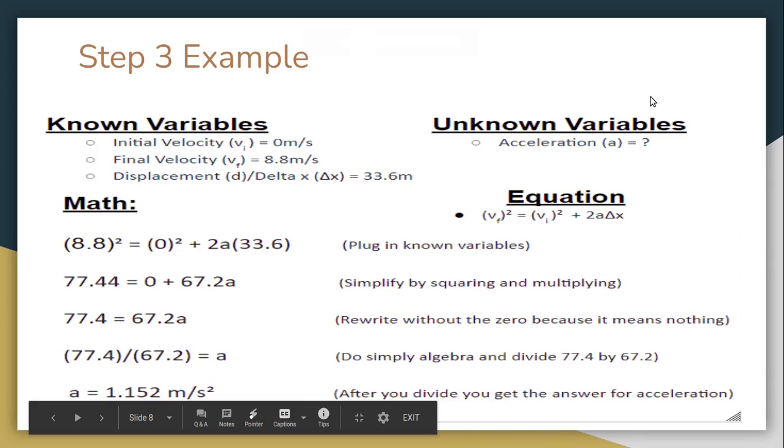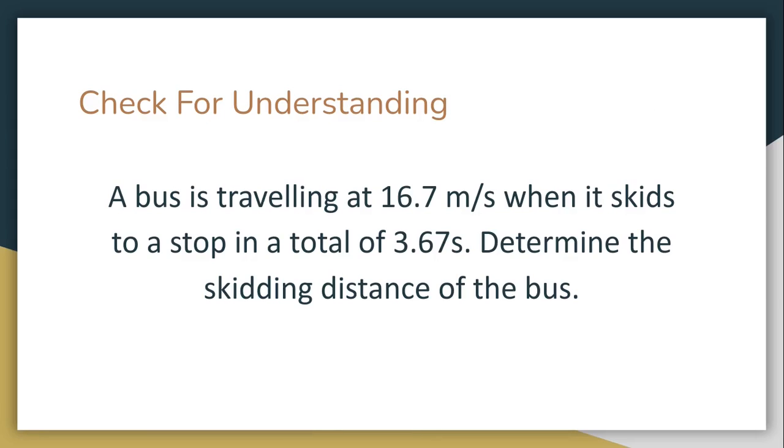And then this is everything that I just went over. So now let's just do a quick check for understanding. A bus is traveling at 16.7 meters per second when it skids to a stop in a total of 3.67 seconds. Determine the skidding distance of the bus. Okay, everyone, pause the video here and try it for yourself.